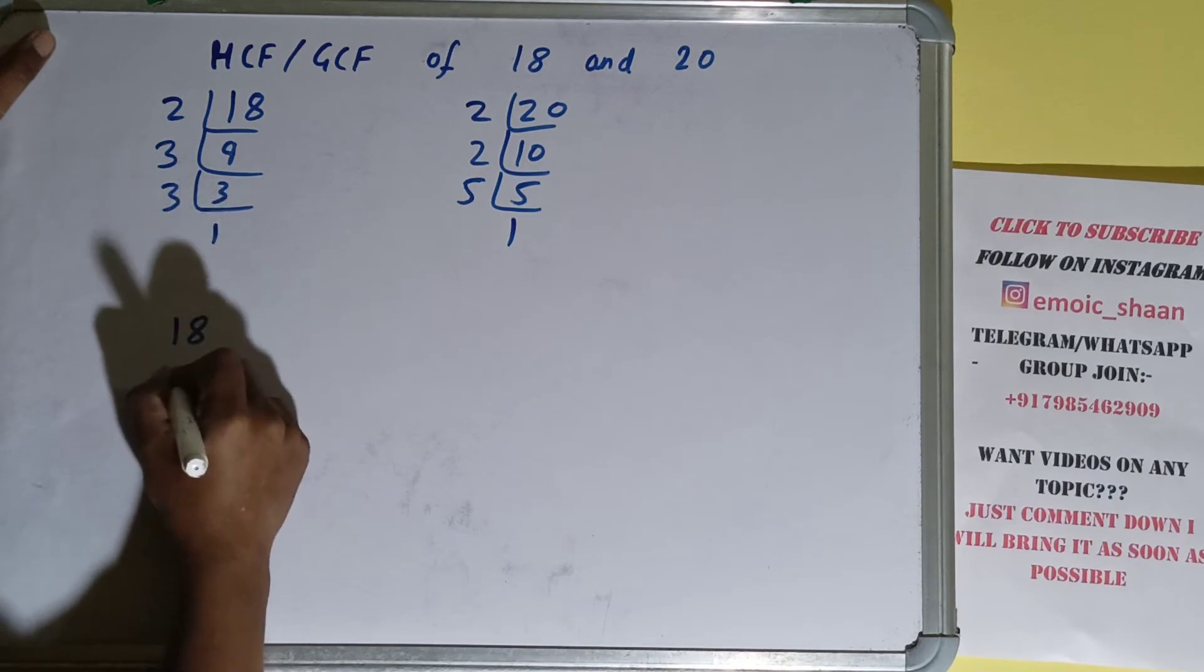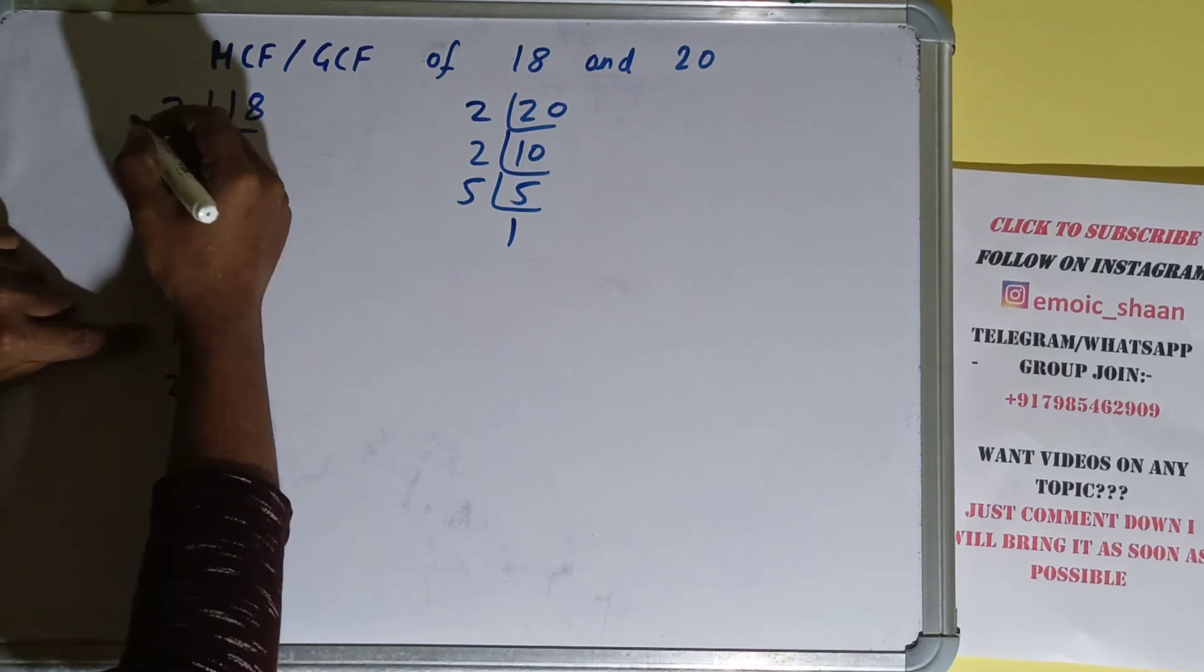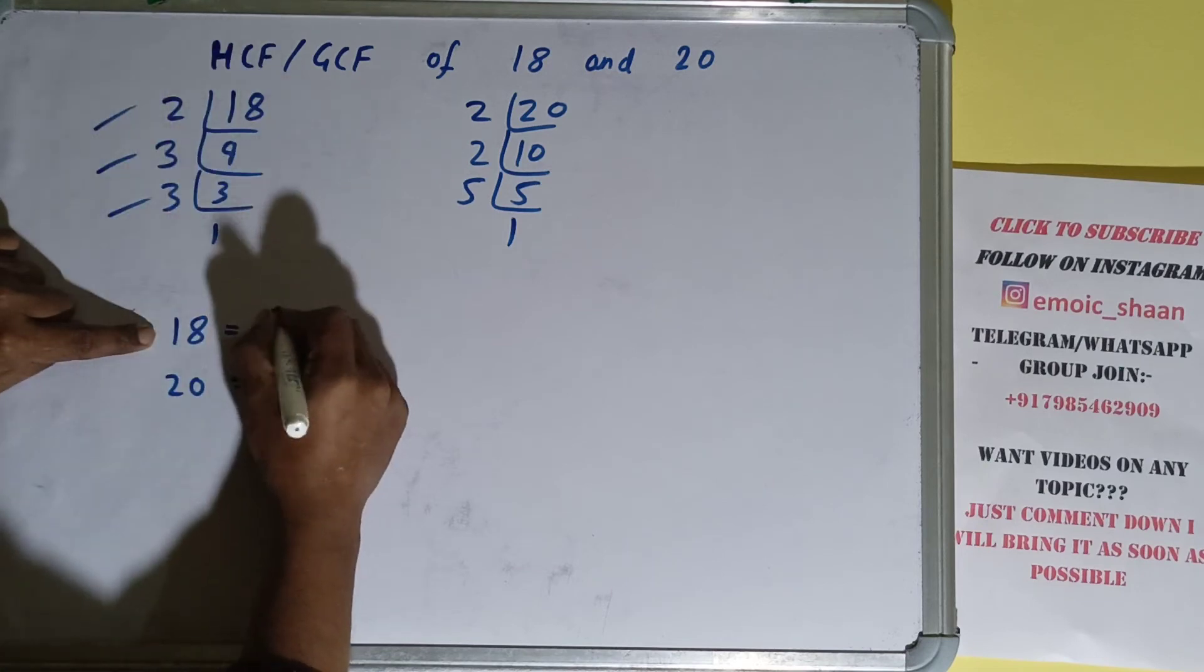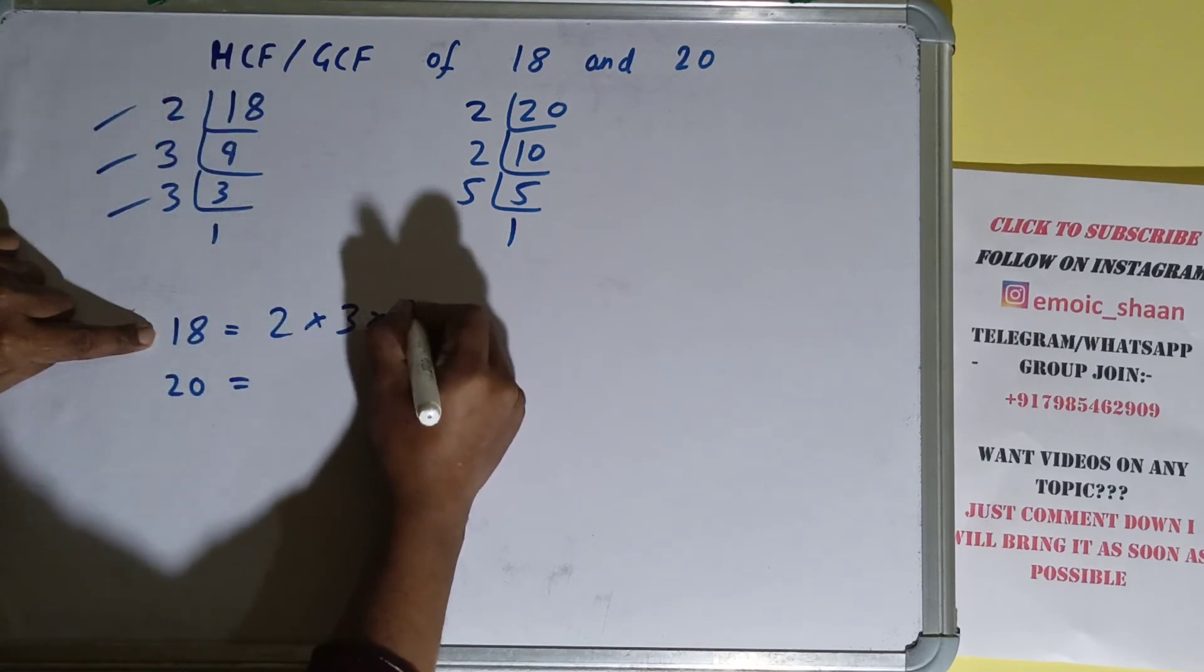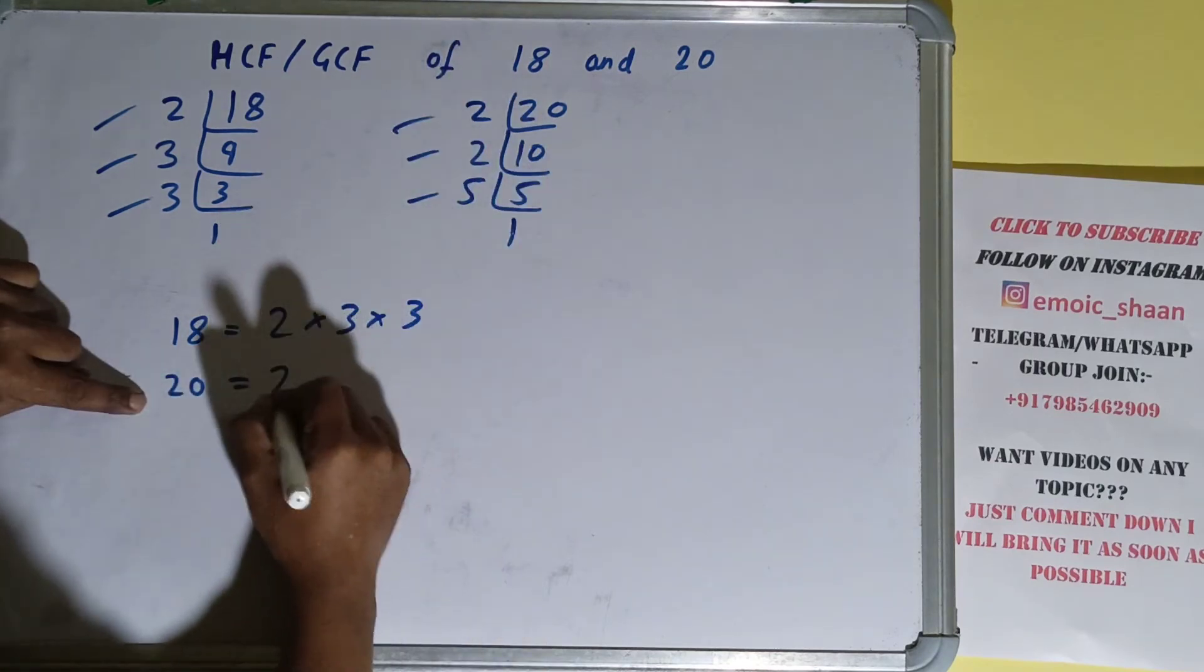The next thing we need to do is write down each of the numbers with their respective prime factors. So for 18, what prime factors do we have? 2, 3, 3. For 20, what prime factors do we have? 2, 2, 5.